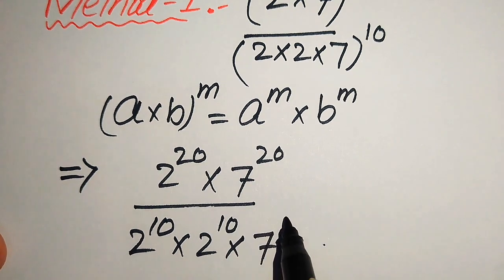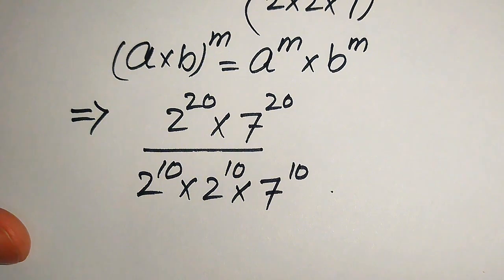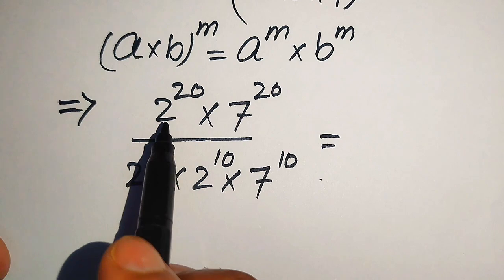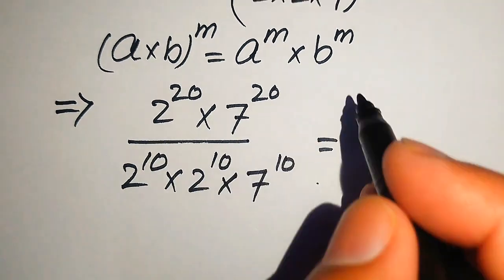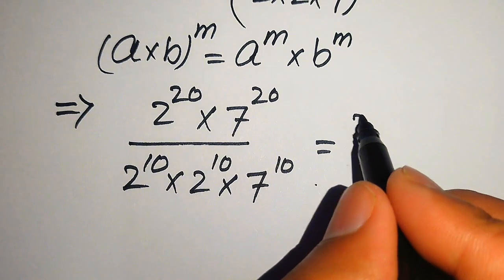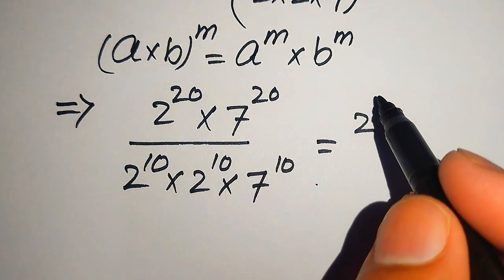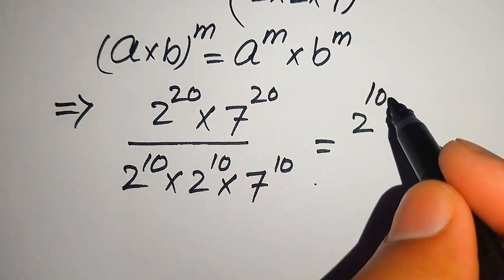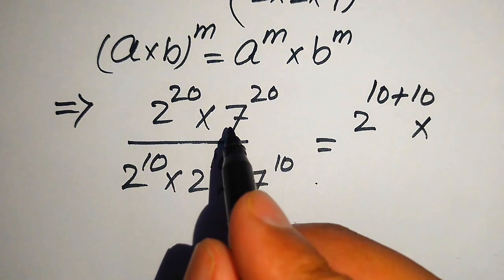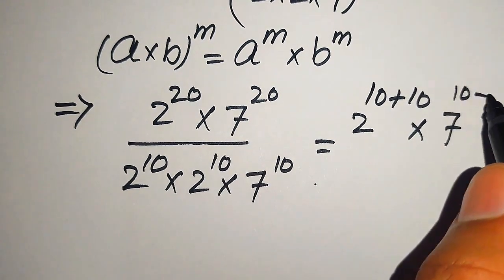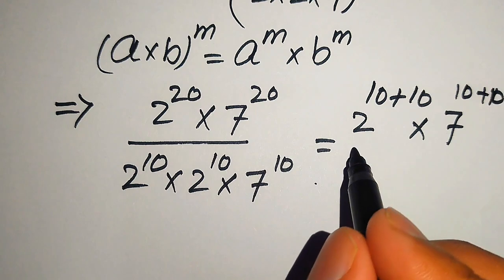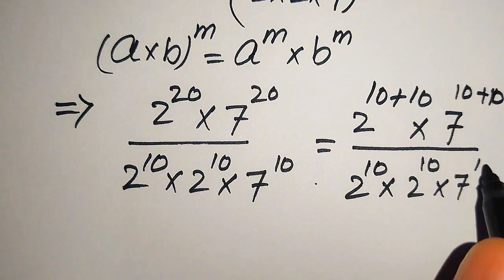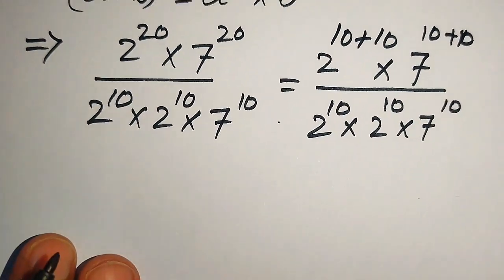In the next step, we focus on the numerator terms and break them further. We write 2^20 as 2^(10+10), and 7^20 as 7^(10+10). The expression is then divided by 2^10 × 2^10 × 7^10.